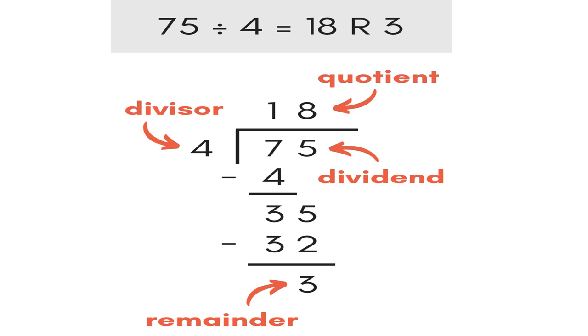Then you bring down the 5, because 3 is too small. Then you repeat: 4 into 35, 8 times, because 4 times 8 is 32. Subtract, and there's a 3 left. The answer is 18, remainder 3.